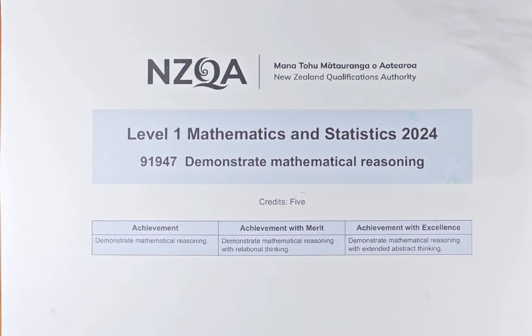Good day and welcome to question 3B of the 2024 Demonstrate Mathematical Reasoning paper number 91947. This is a 5 credit paper and we are doing question 3B which is a merit question.